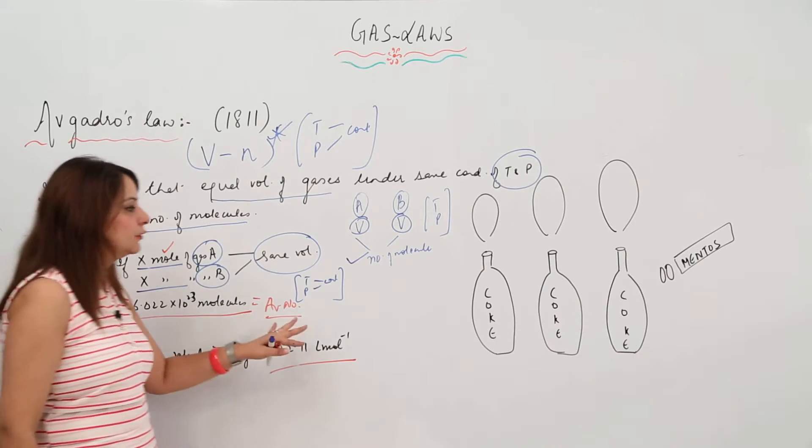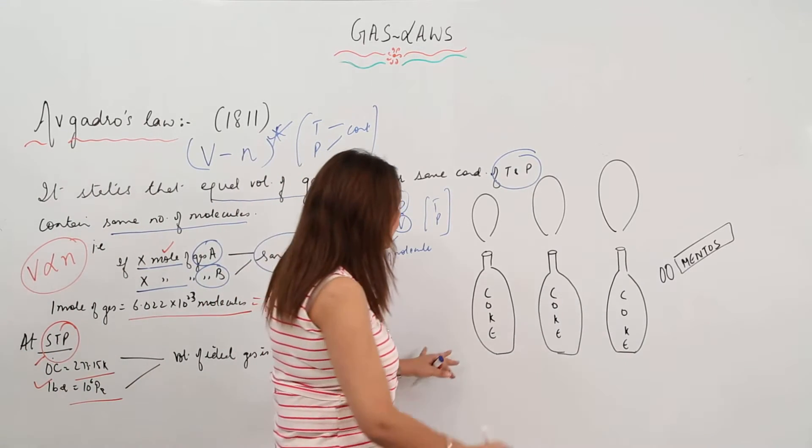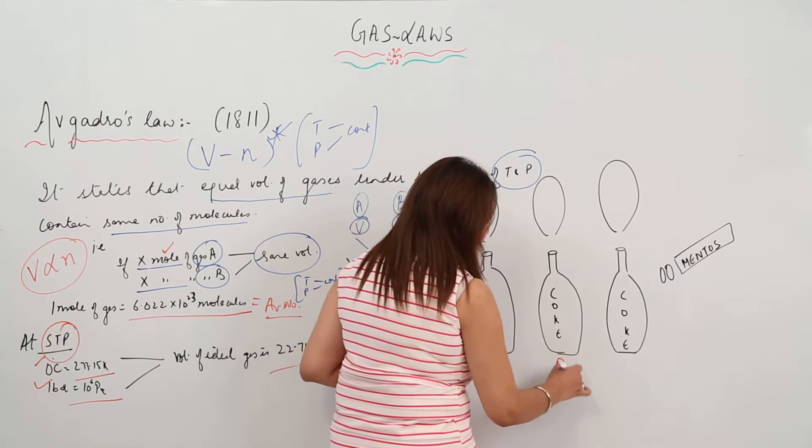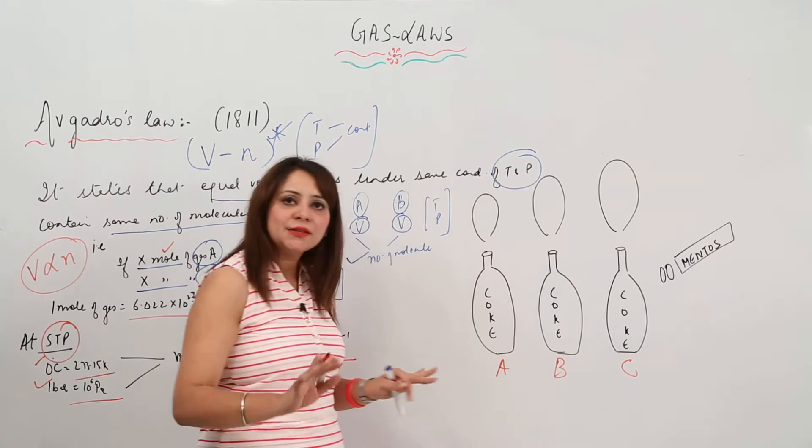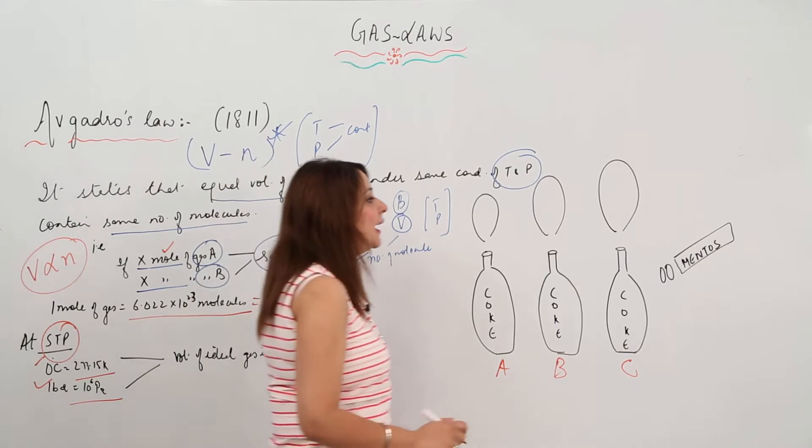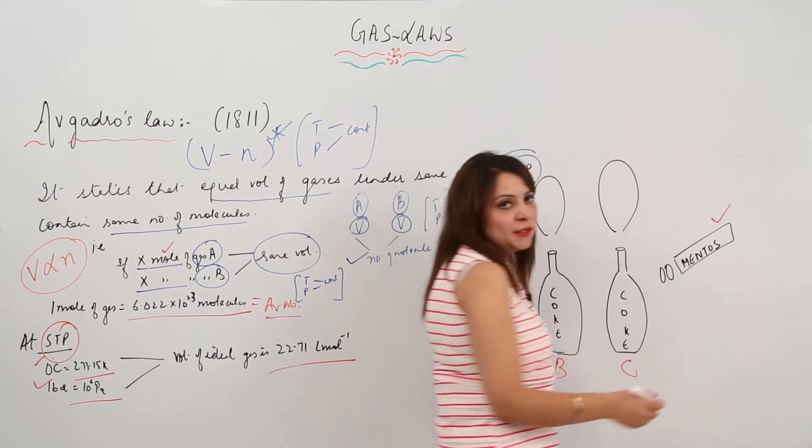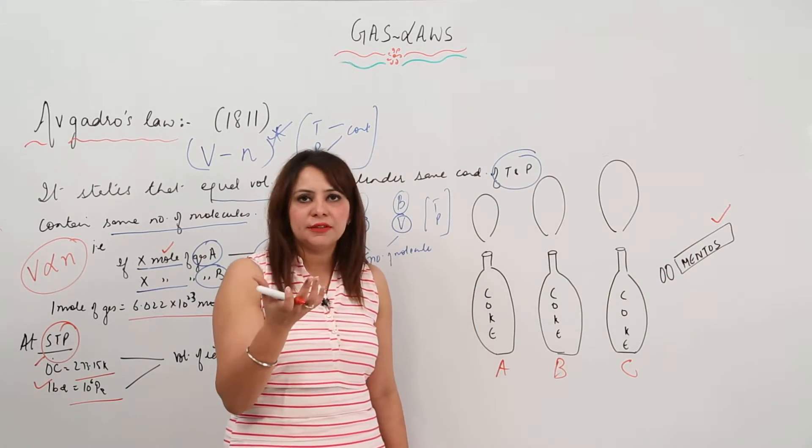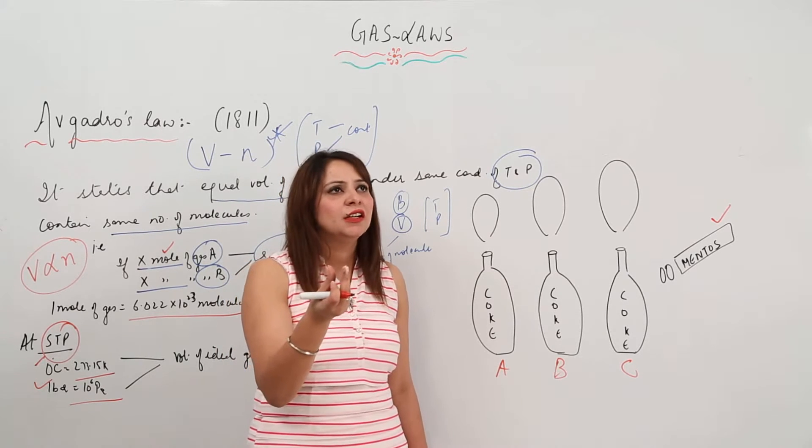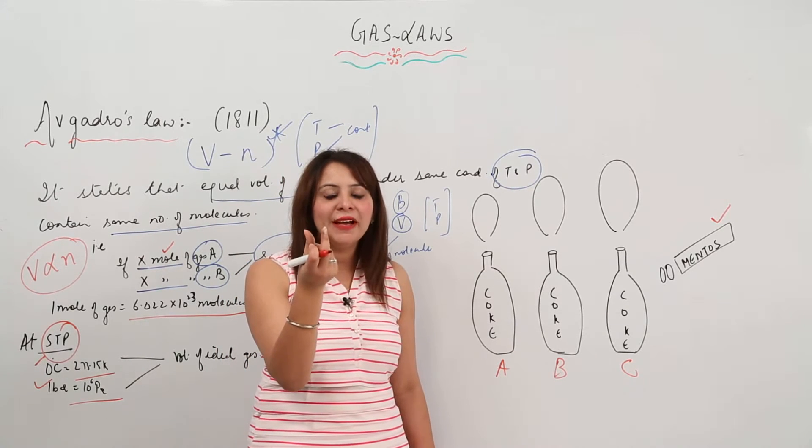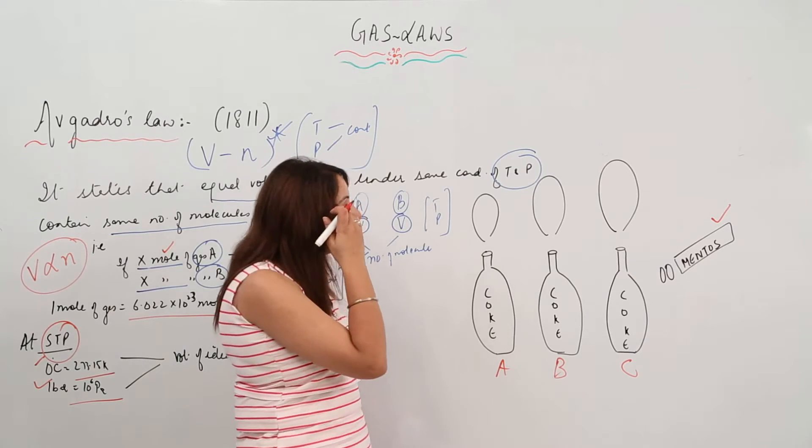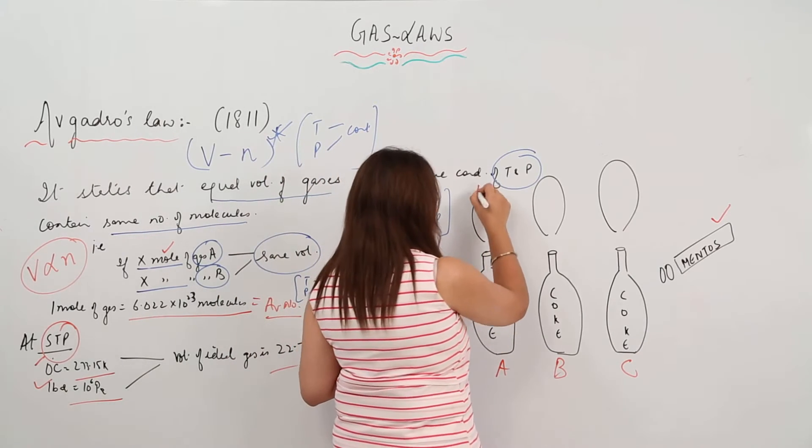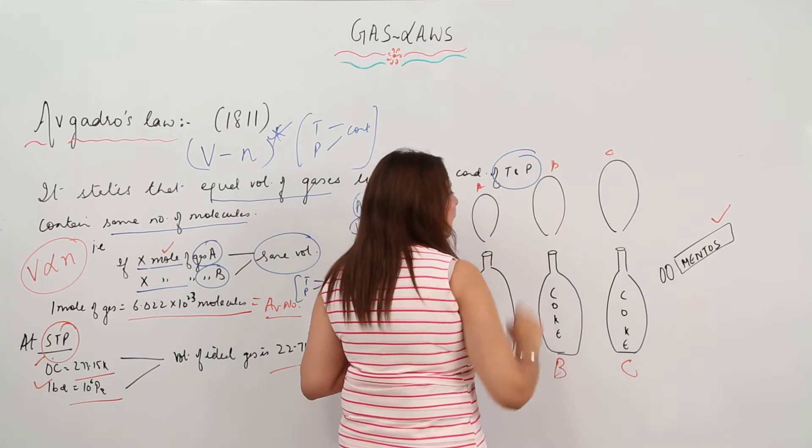Now I'm going to explain this with a logical experiment. Let's take three coke bottles A, B, and C, filled with coke. I have Mentos - the round white tablet, like a mouth freshener. We also have balloons A, B, and C.